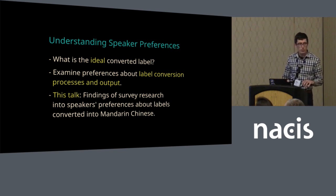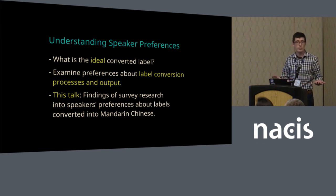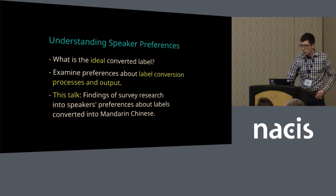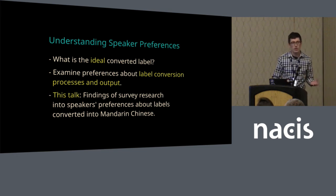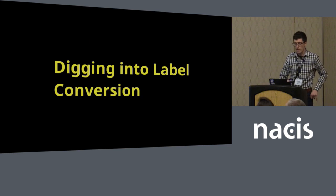One way to do that is to dig into preferences about specific label conversion processes and output — for example, translation, transliteration, whether speakers would like the label to be converted at all, whether they'd prefer to have a categorizer word. So this talk is going to focus on what I found through surveying Mandarin speakers about their preferences.